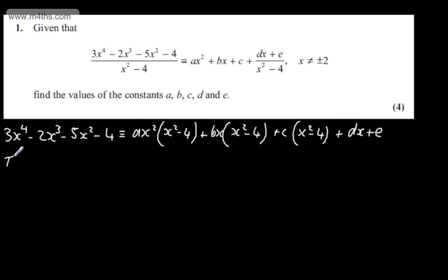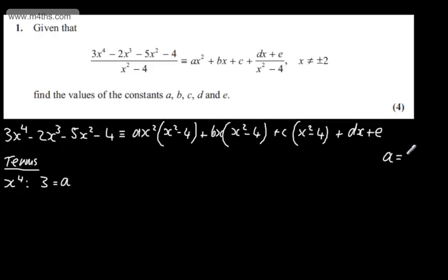Now I'm going to equate coefficients. Looking at terms in x to the fourth: on the left I've got 3, and on the right the only term in x to the fourth is ax to the fourth, so a equals 3. Looking at terms in x cubed: on the left we've got minus 2, and on the right all I've got is bx cubed, so b equals minus 2.